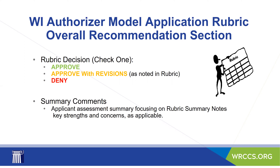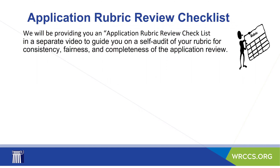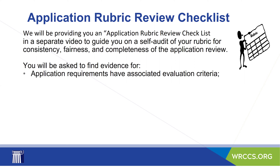Making a score of meets, partially meets, or does not meet, and an overall decision of approve, approve with revisions, or deny are important and key — but it is equally as important that your reviewers have comments. I put together an application rubric review checklist just for all of you in the state of Wisconsin. We will be providing this list in a separate guide. You can use it as a self-audit of your rubric for consistency, fairness, and completeness, or you can keep it beside you as you develop your first application review rubric.